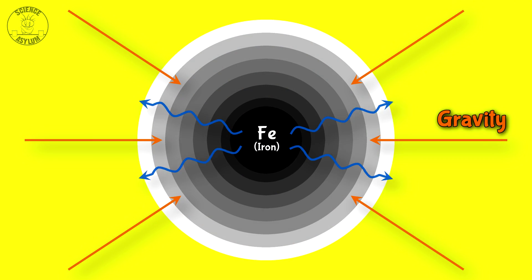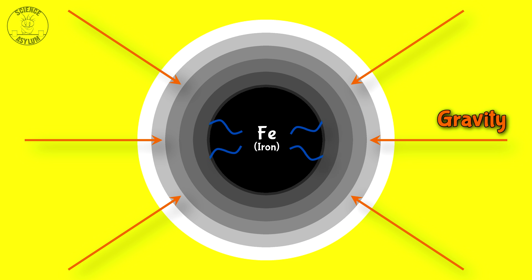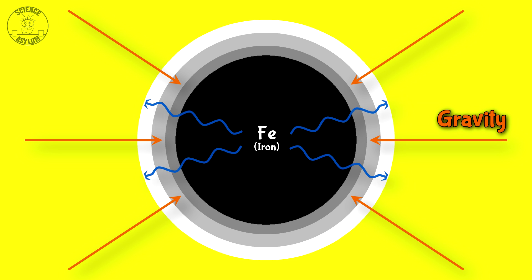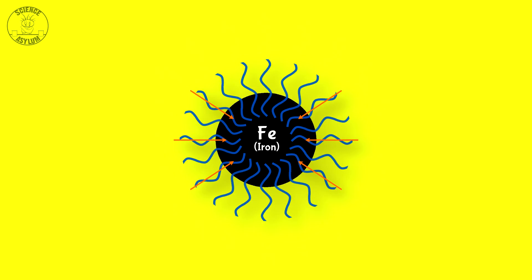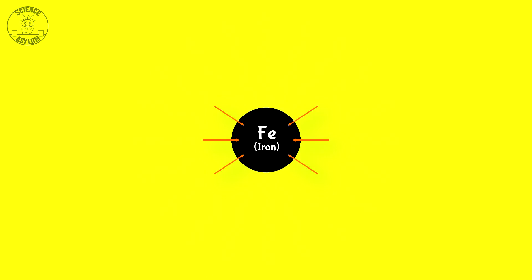In the final moments, the core is basically a big clump of iron plasma. Since fusion of iron consumes more energy than it releases, there's no more outward pressure to balance gravity. The core suddenly collapses under its own weight and releases more energy than the star has seen in its entire lifetime.